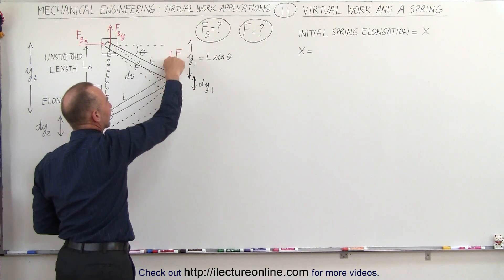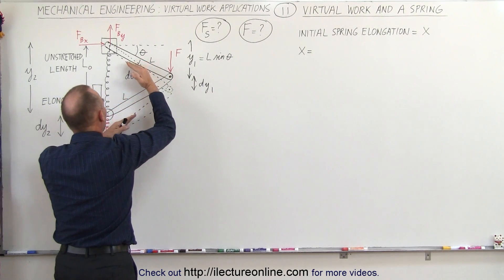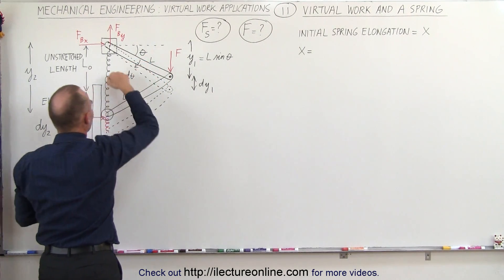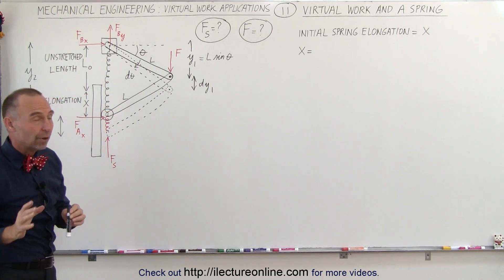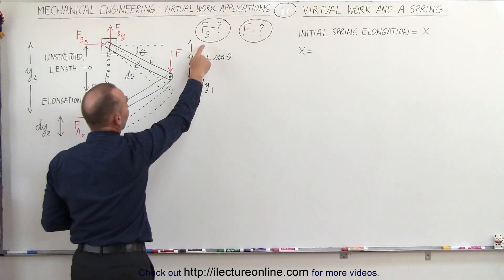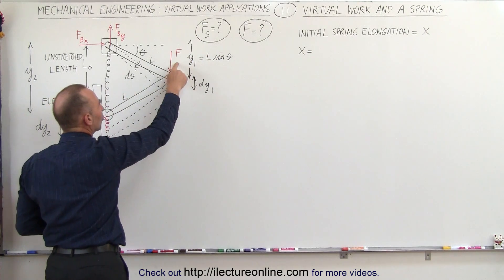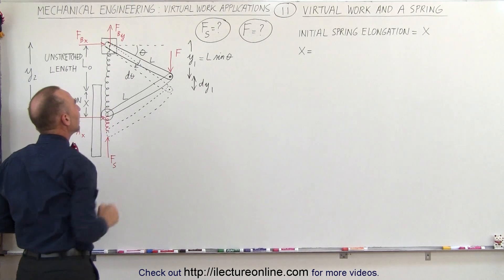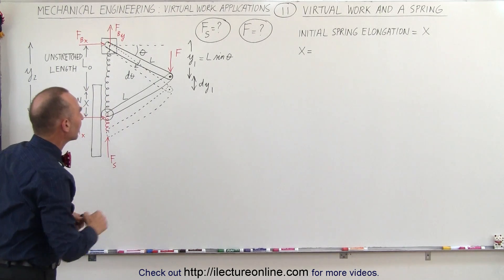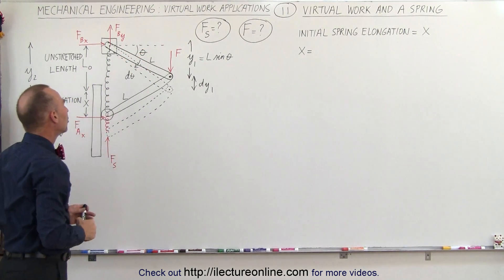As you push down at the end, the whole contraption will elongate and pull on the spring. We're going to find the force on the spring, and then find the applied force in terms of the spring force and the angle theta. The beams will swing through a small angle change d theta.